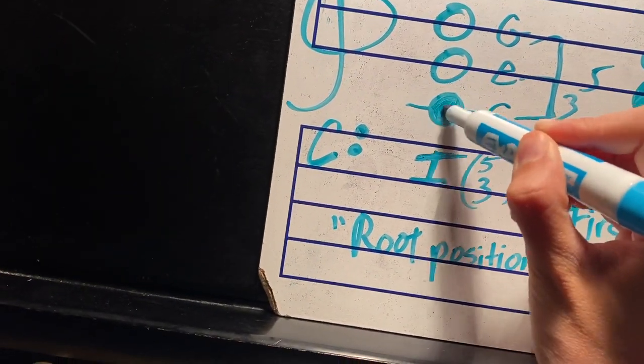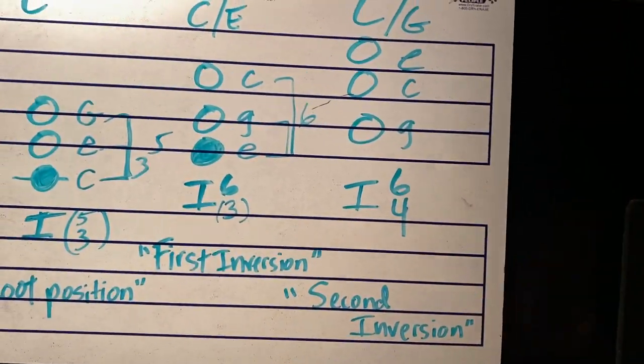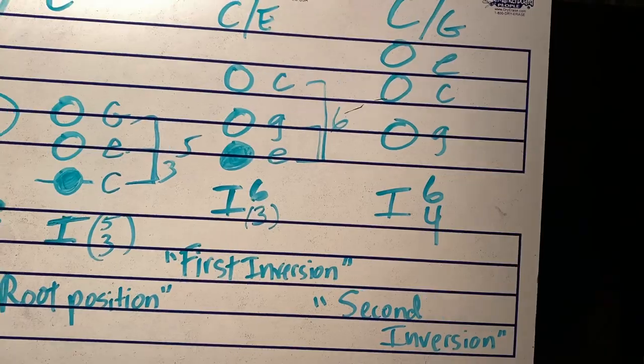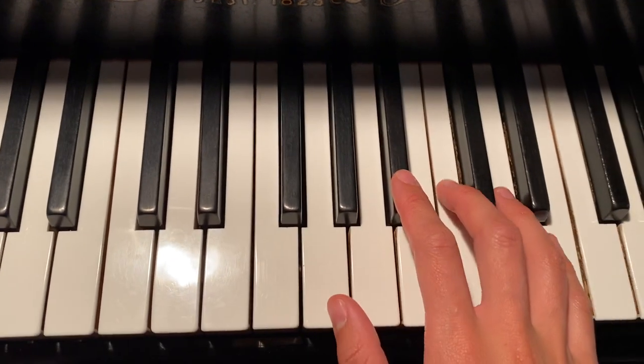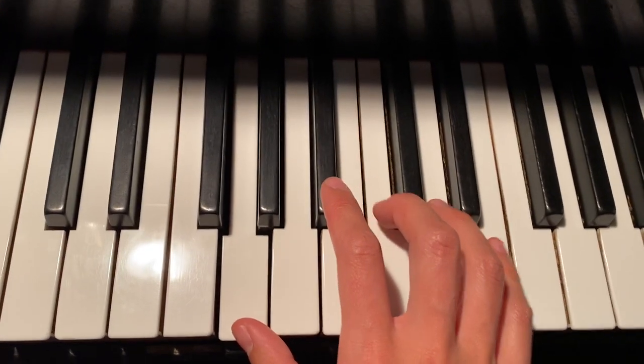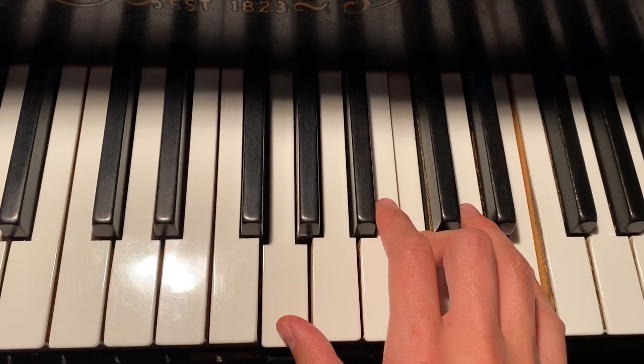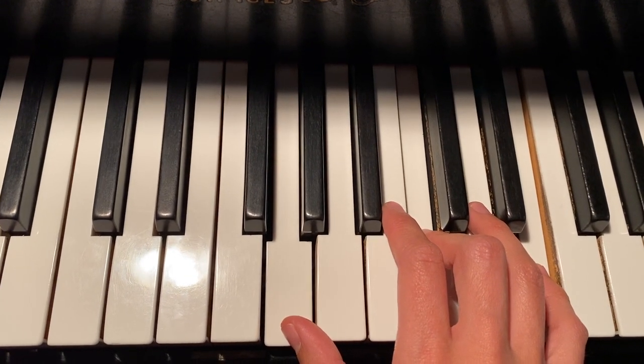Root position means the root of the chord is on the bottom. When we get to second inversion, this basically means the fifth of the scale is on the bottom. So G is going to be on the bottom, and then you need the rest of the notes in the chord, C and E. This is the most unstable of all the triad inversions.